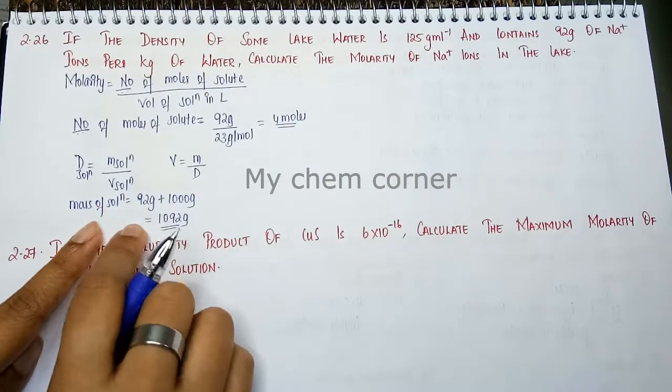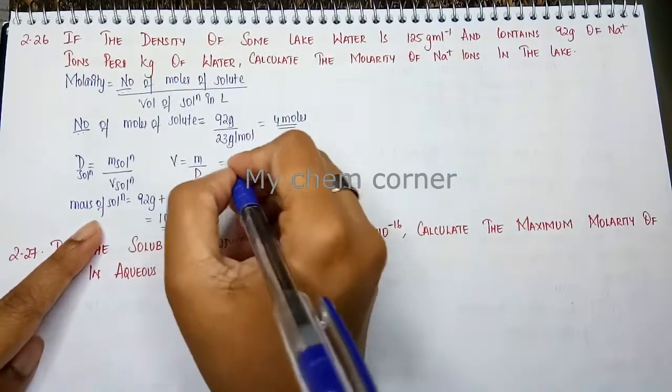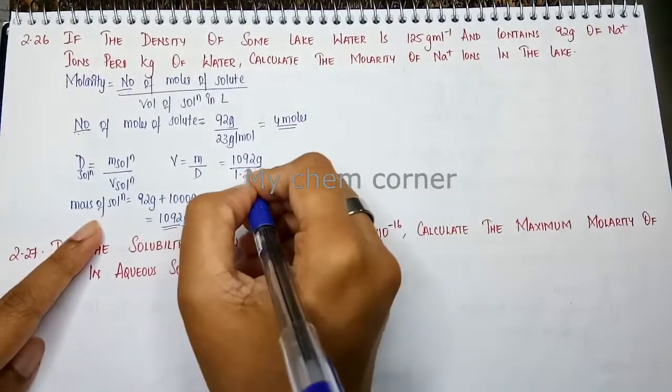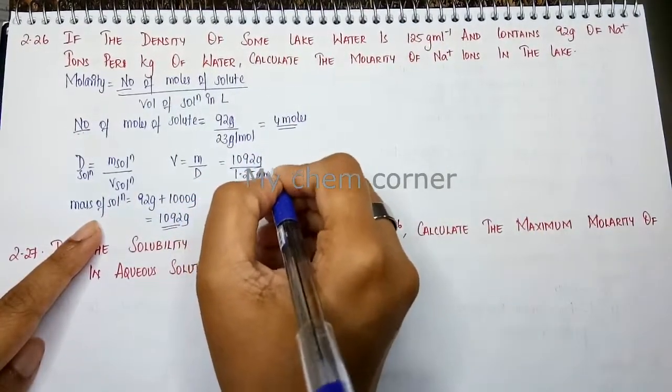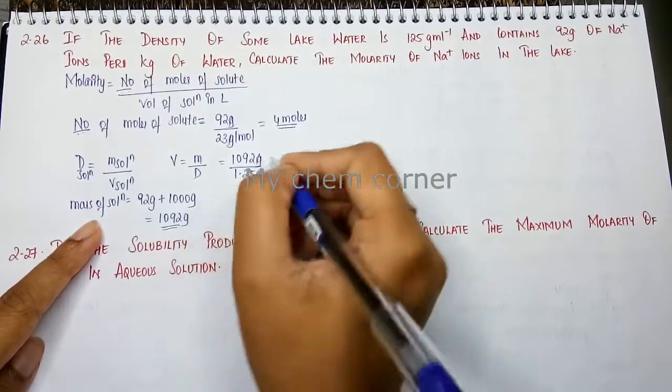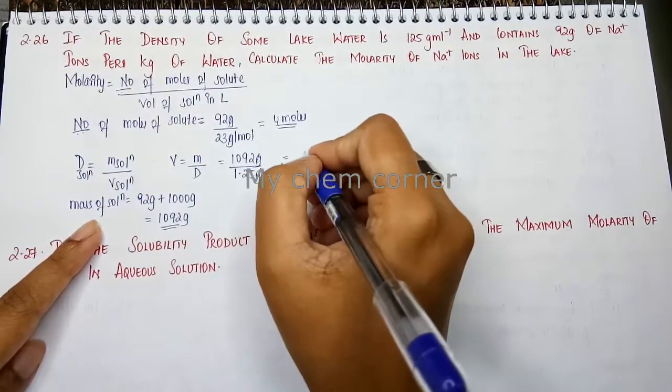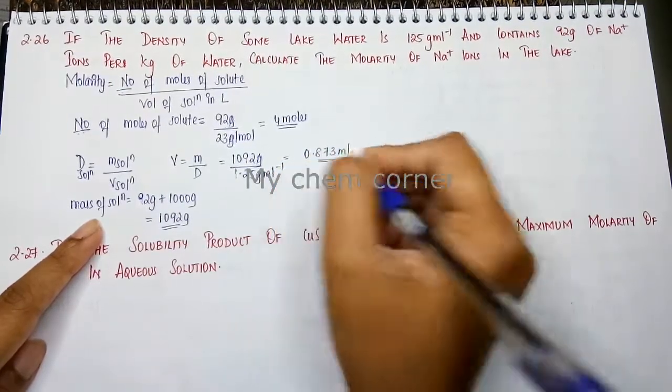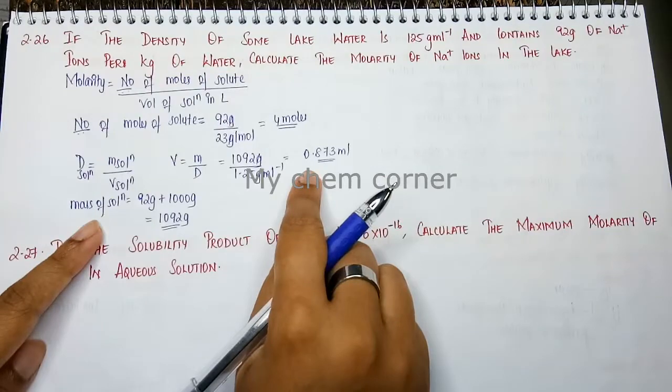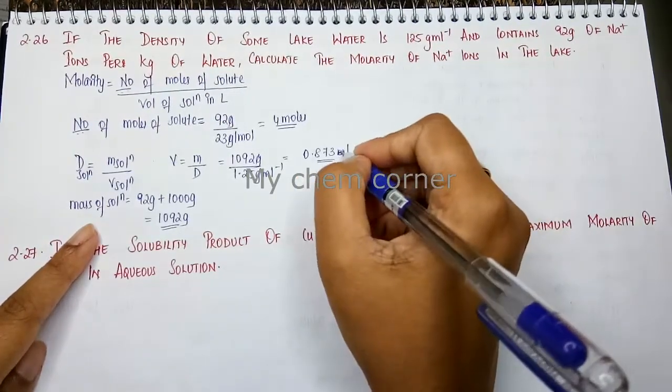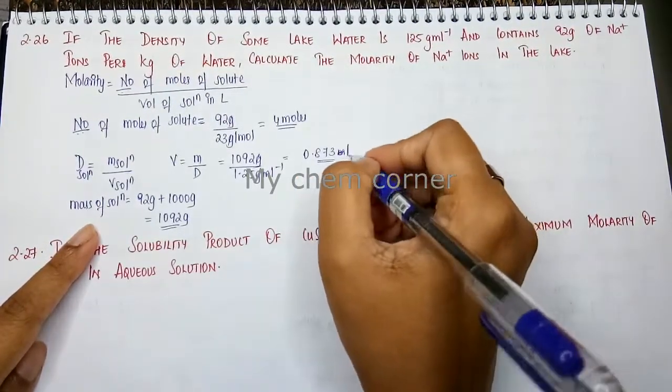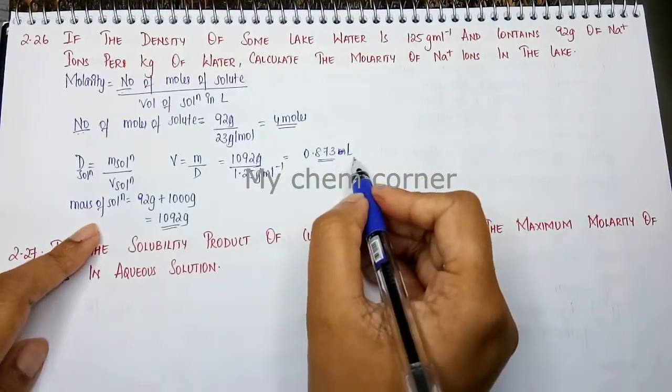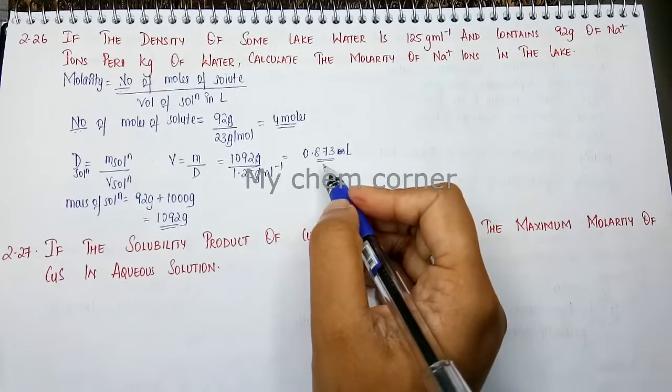Now when I substitute this in the formula, this will be 1092 grams divided by density, which is 1.25 grams per milliliter. Gram and gram will get cancelled. The volume here is going to be 0.873 liters. How I got this is I got 873.6 milliliters which I converted to liters.